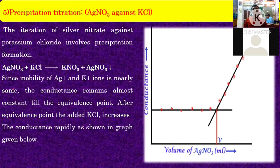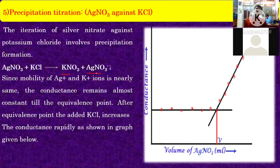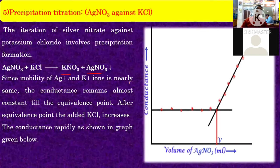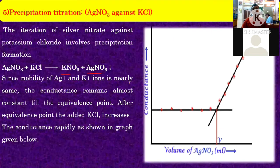In this titration, the downward arrow indicates formation of precipitate. Since the mobility of Ag⁺ and K⁺ ions is nearly the same, conductance remains almost constant till the equivalence point. After the equivalence point, addition of KCl increases conductance rapidly as shown in the graph.